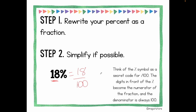Step two says I need to simplify if possible. Both numbers are even, so I can divide by two. Eighteen divided by two is nine, and one hundred divided by two is fifty. I cannot continue simplifying — if I divided 9 by nine I'd get one, but 50 divided by nine gives a decimal. So nine over fifty is my final answer.